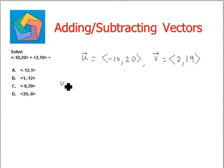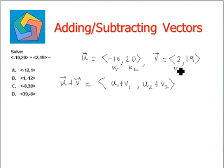So we have to find out u plus v which is equals to u1 plus v1 comma u2 plus v2. This is our u1, u2 and this is v1, v2.